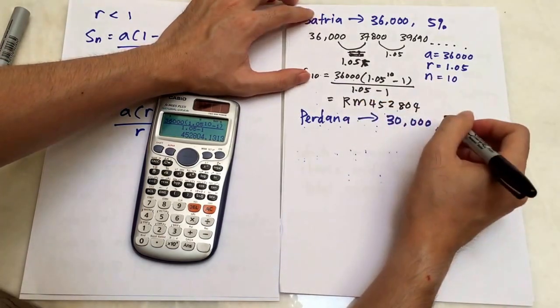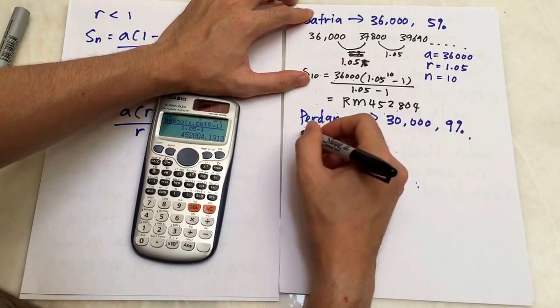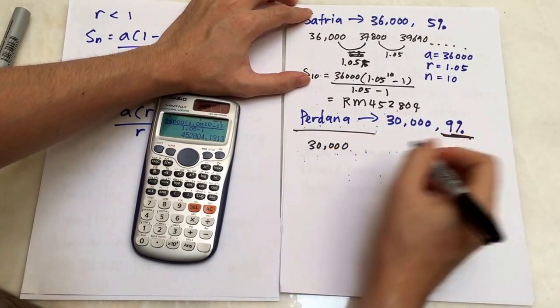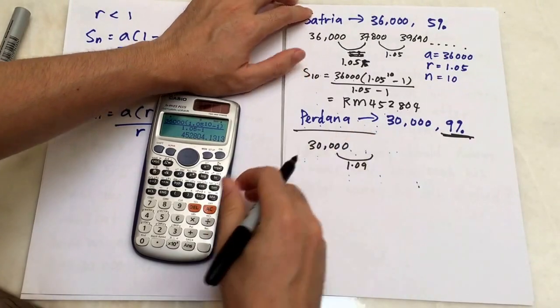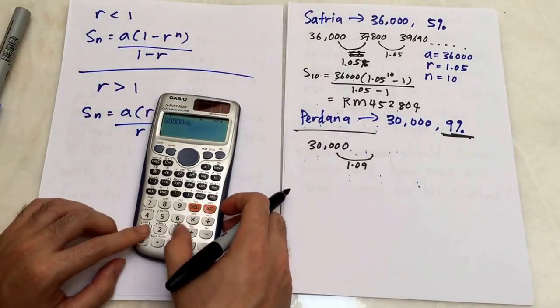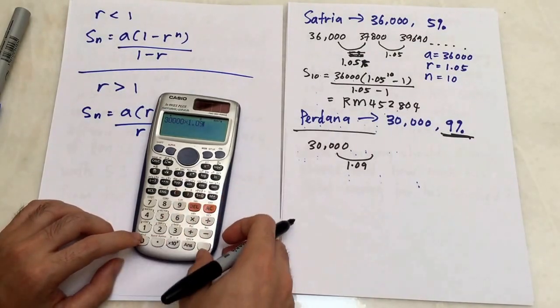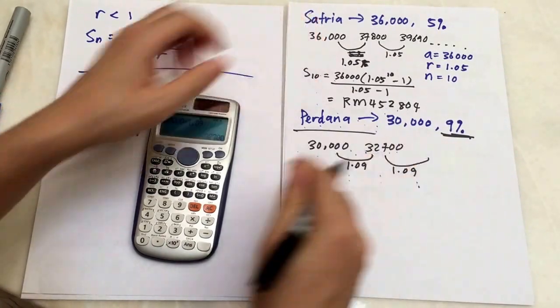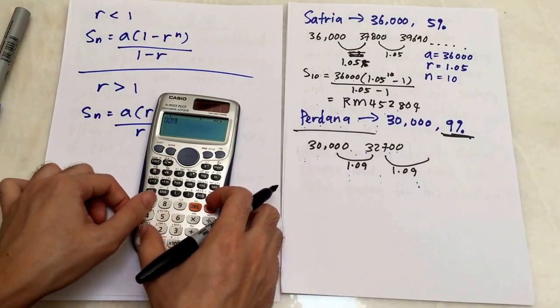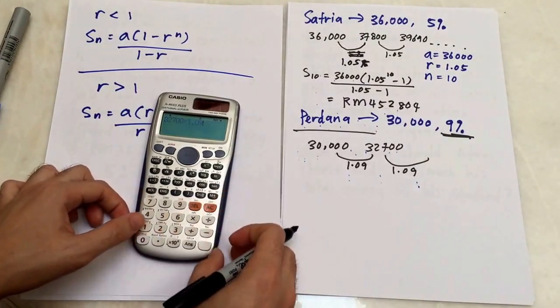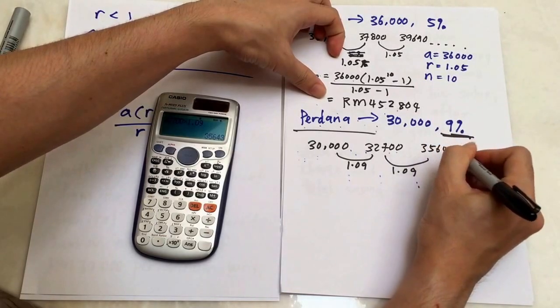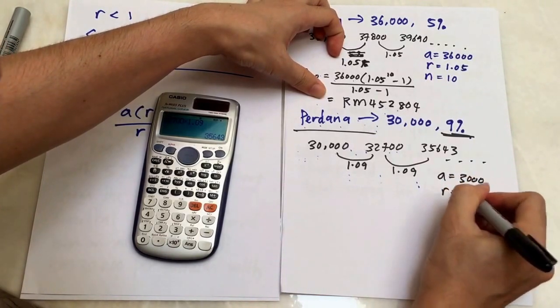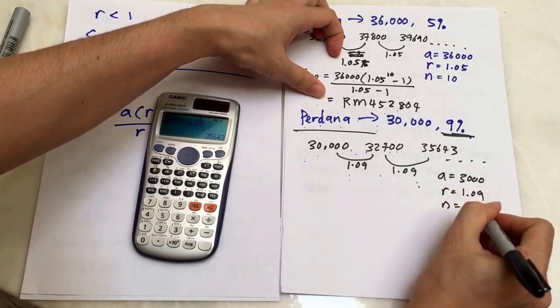I will do the same thing for company Berdana. The first thing is 30,000. Then the increment is 9%. So I will multiply by 1.09. I use 30,000 × 1.09, which is 32,700. Then I multiply 1.09 also, so 32,700 × 1.09 = 35,643. Just to give you some basic idea. My a in this case is 30,000, my r is 1.09, and my n is still 10 years.